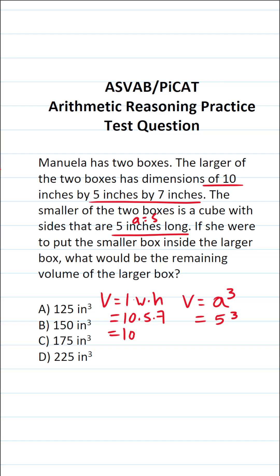This becomes 10 times... 7 times 5 is 35. 10 times 35 is going to be 350. What is 5 to the third power? That's the same thing as 5 times 5 times 5. That's 5 times 5, which is 25. 25 times 5 is going to be 125.